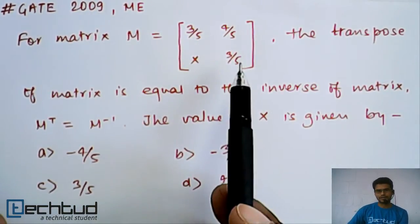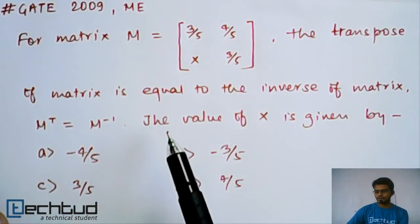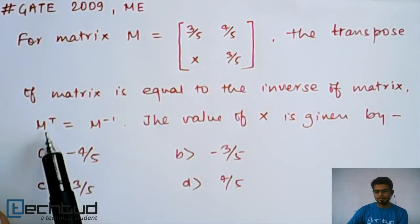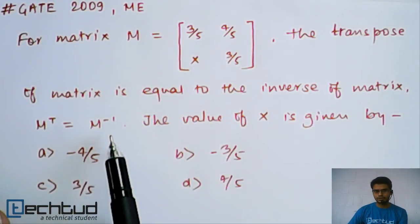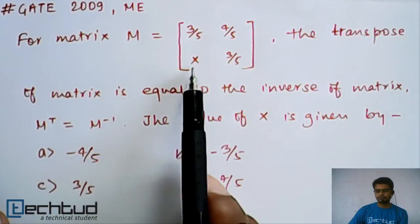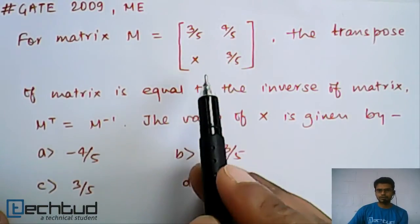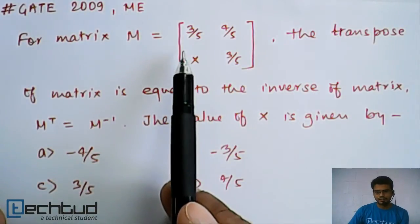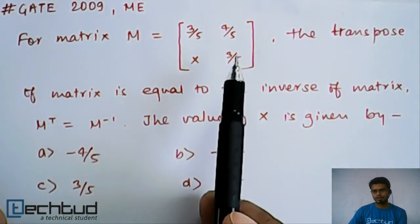For matrix M, which is given here, the transpose of matrix is equal to inverse of matrix. That is M transpose is equal to M inverse. The value of x is given by. So for this x, what would be the value so that it satisfies the condition that when we take transpose of this matrix, it will be equal to inverse of this matrix.